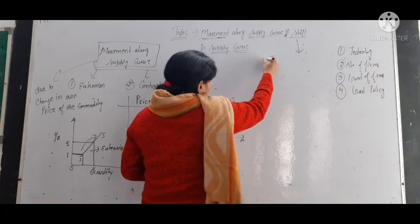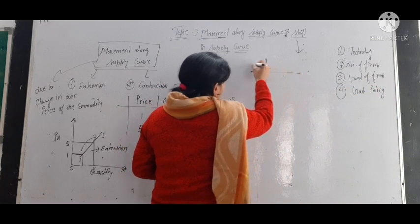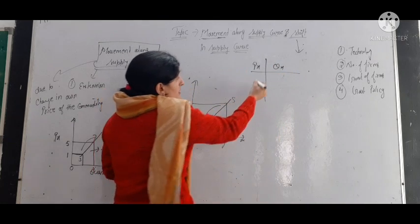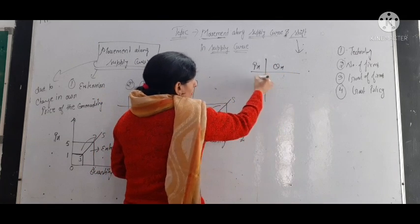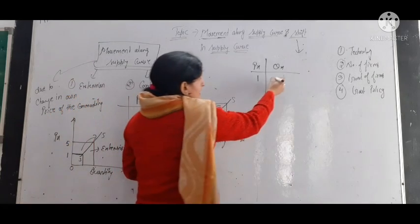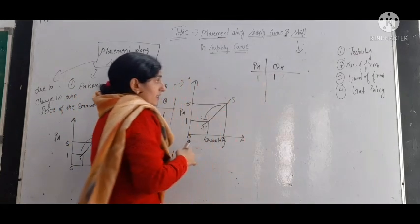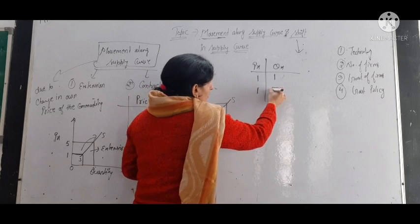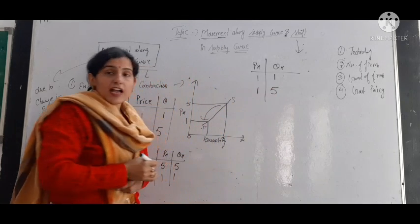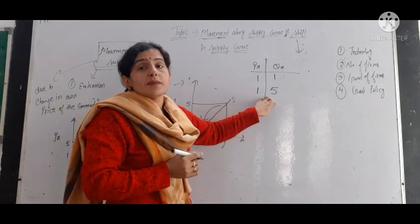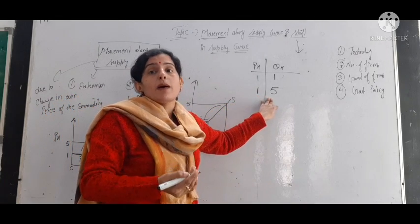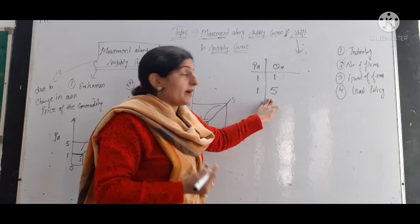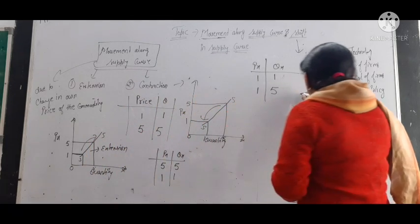We will show this with the help of a table. We have PX (price of commodity X) and QX (quantity supplied). First, the price of the commodity is 1 and the quantity supplied is also 1. Now, the price of the commodity remains 1, but the quantity supplied is 5. So at the same price, the producer is supplying more of the commodity — more quantity is being supplied by the producer.